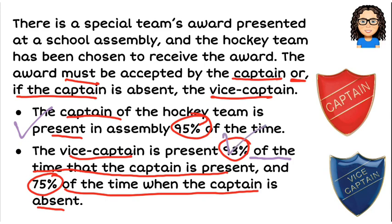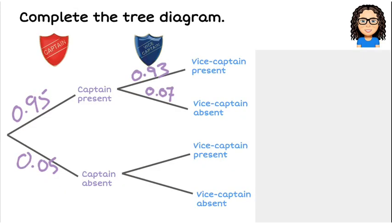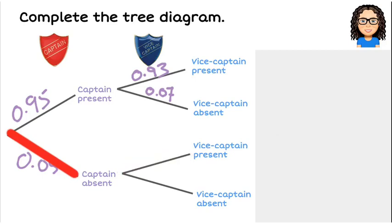Now we've got our 75%. So 75% of the time when the captain is absent, the vice captain is present. So that 75% will go on this branch here, which means 25% of the time the vice captain would be absent if the captain is also absent.